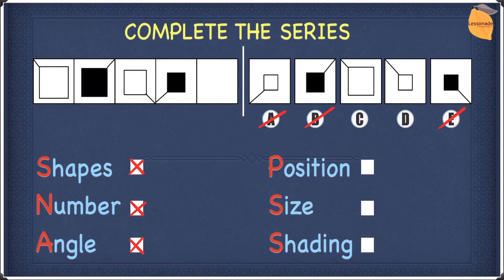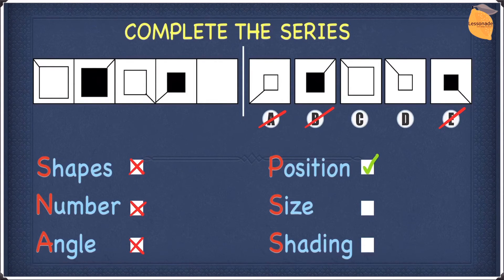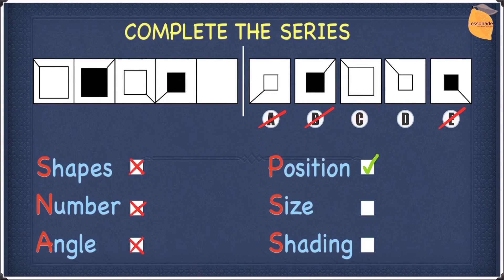The next thing we're going to look at is size. The square goes from large to smaller, getting smaller and smaller. If the pattern continues, the square would only get smaller. The only options remaining are C and D. Looking at C, the square is very large — larger than the previous one — so C will not work and we can cross it off. That leaves only D. So our answer to this question is D.